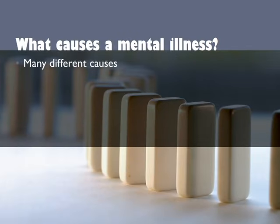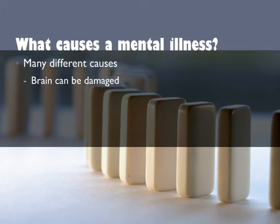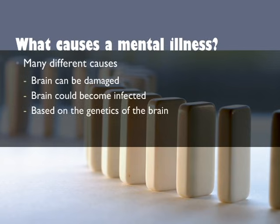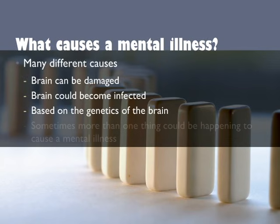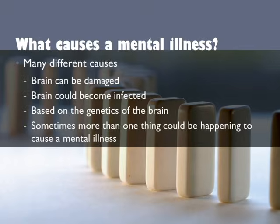So how can the brain become sick? There are many different ways this could happen. One way is that the brain could be damaged by something from outside, like an injury, a burst blood vessel, or very severe stress. Another way is that the brain could get an infection — for example, meningitis is an infection of the brain. A third way the brain could become sick is based on genetics: each brain has a pre-programmed type of development, and it could be that the program is not working properly, so the brain does not develop properly. Sometimes more than one thing could be happening to cause the brain to become sick.